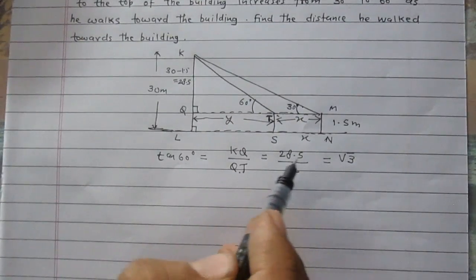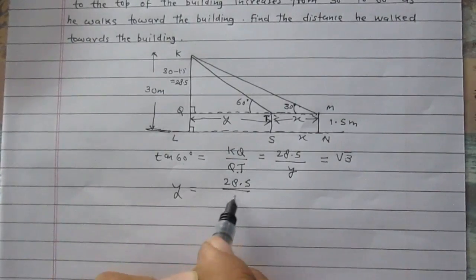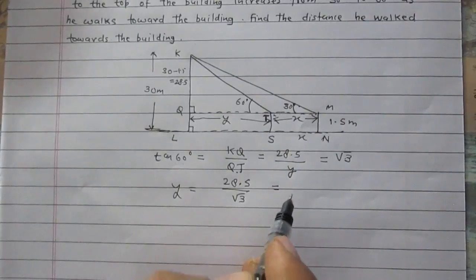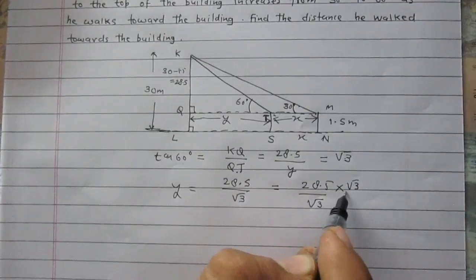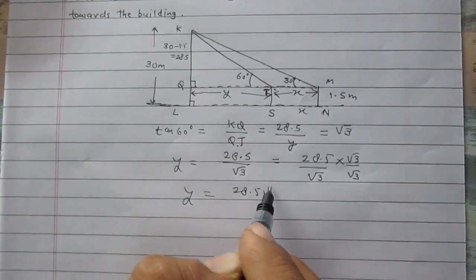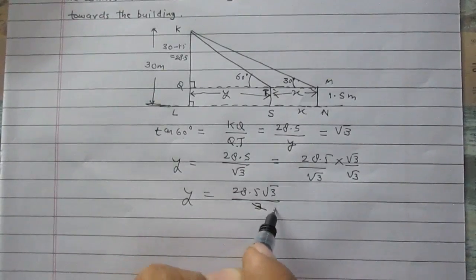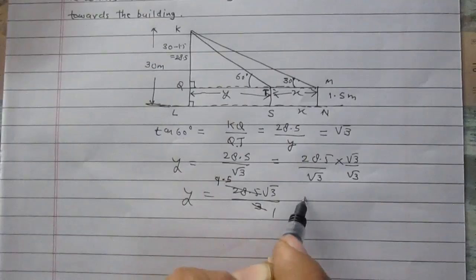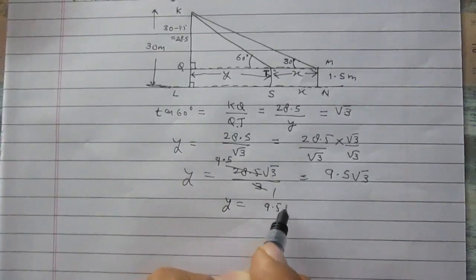We know that tan of 60 degrees is square root 3. So comparing these two terms we can say Y is 28.5 divided by root 3. On rationalizing, it is 28.5 divided by root 3, root 3 and root 3. We will get Y is equal to 28.5 root 3 divided by 3. We can reduce 28.5 by 3, so it is 9.5 square root 3. So the value of Y is 9.5 root 3.